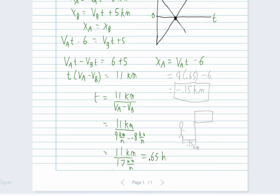Let's just plug it in. So we get nine times 0.65 minus six. And then when you put that on the calculator, you get that the distance away from the flagpole is minus 0.15 kilometers.